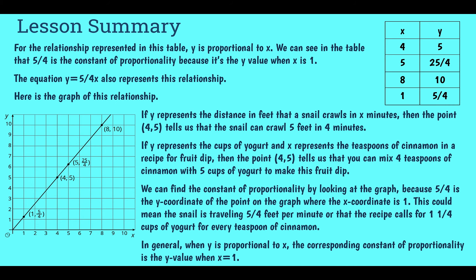In the example here, we have the same proportional situation represented three ways. We have it in a table. We have it in an equation of y equals 5 fourths x and we also can see it in our graph. In these three things, our constant of proportionality shows up in different places.